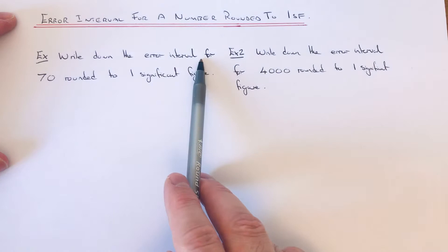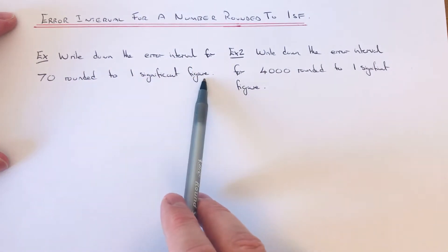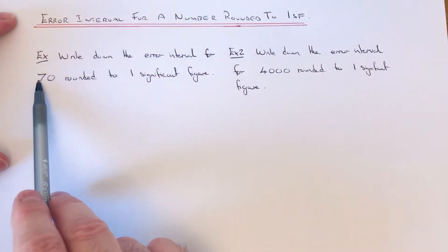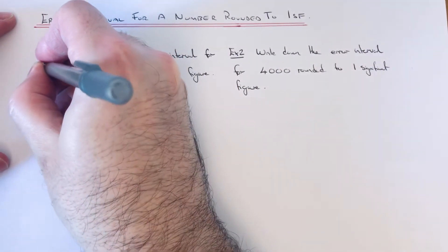We've got to write down the error interval for the number 70 rounded off to one significant figure. Since it's one significant figure, it's been rounded to that first number here, which is the tens column.